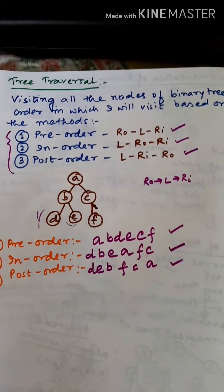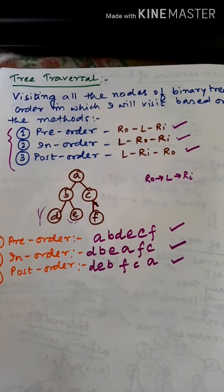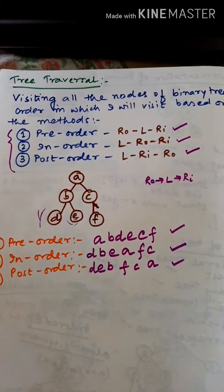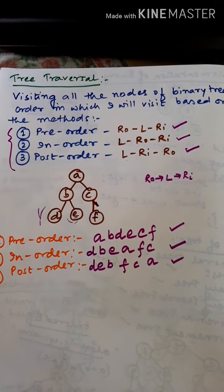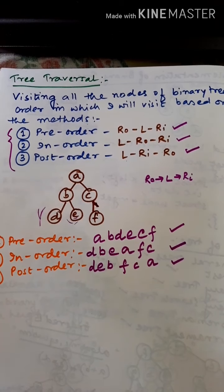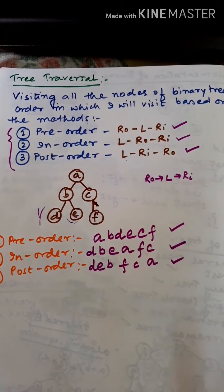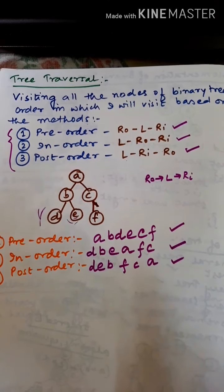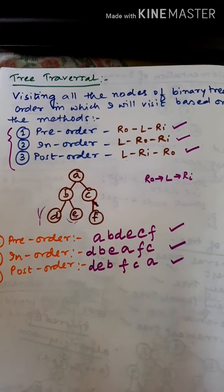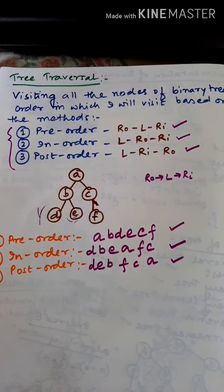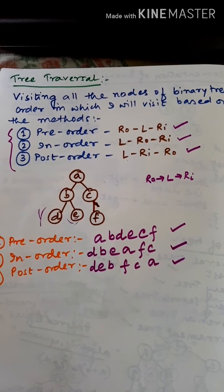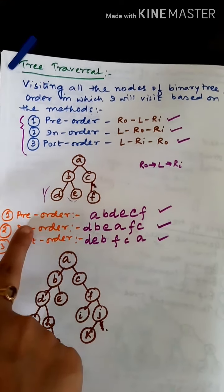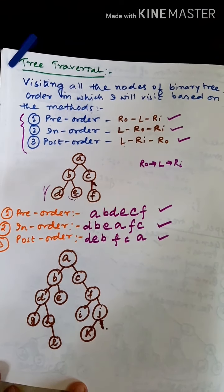Whatever the formula is, when there are left and right subtrees inside, whatever the size of the tree, the same rule is followed in those inner subtrees as well. So let's take another example and try to find out the pre-order, in-order, and post-order traversals.